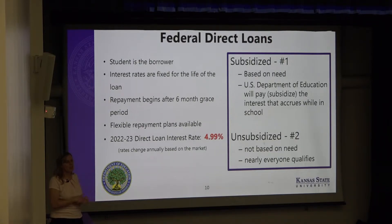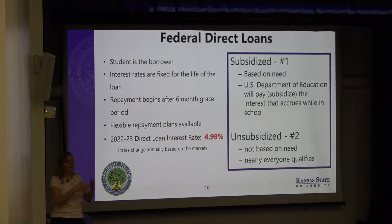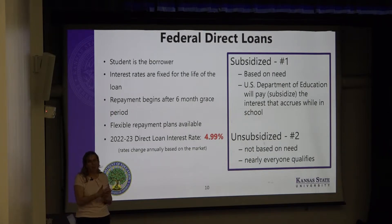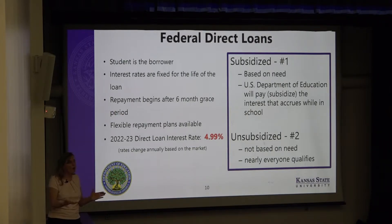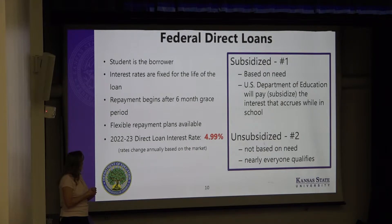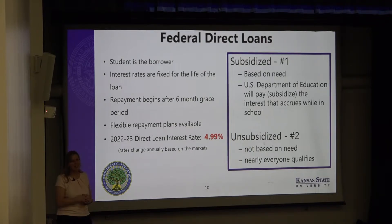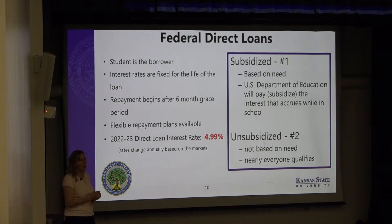The unsubsidized student loan does have interest collecting from the point of disbursement. If you receive a three thousand dollar loan your freshman year, that loan grows with interest. You have the option to pay interest while in school, but it's not required. Repayment has flexible options that can be tailored based on your situation once you reach that repayment stage.